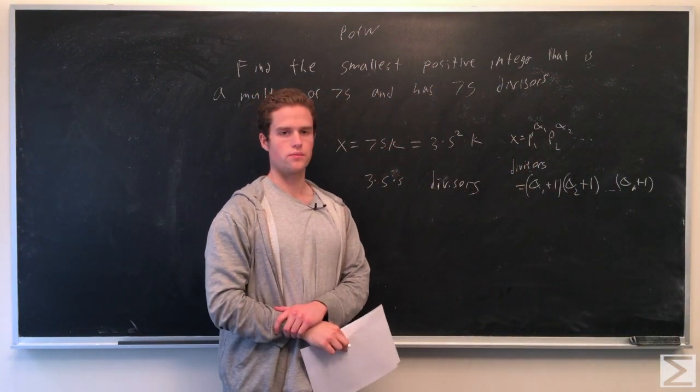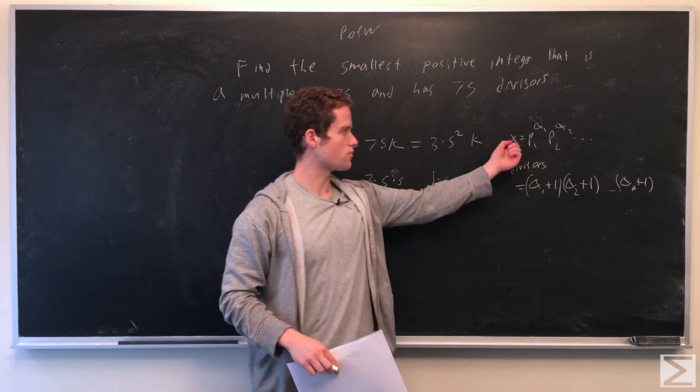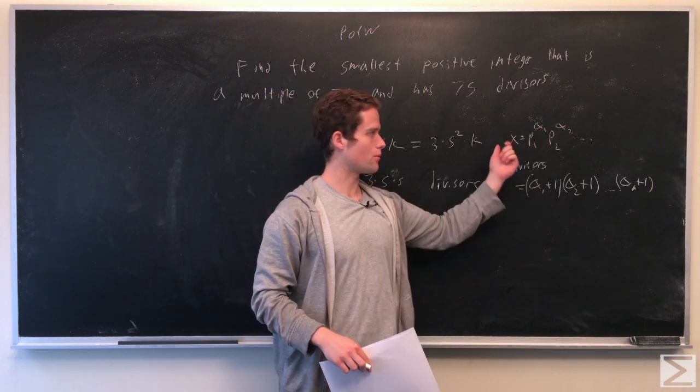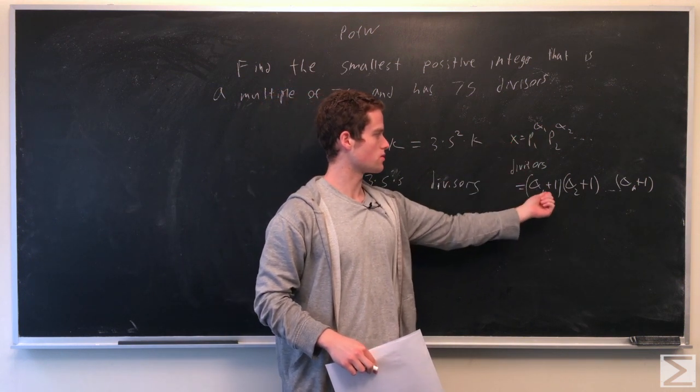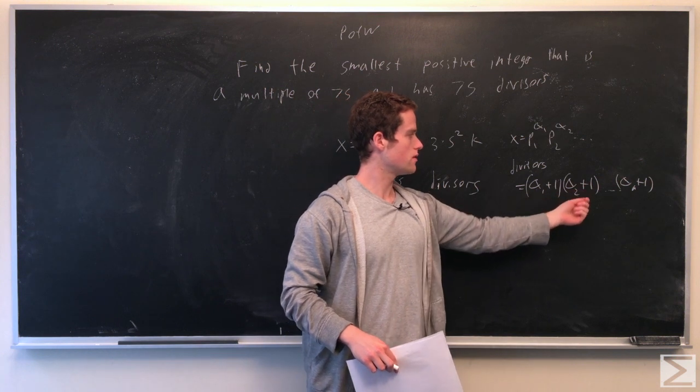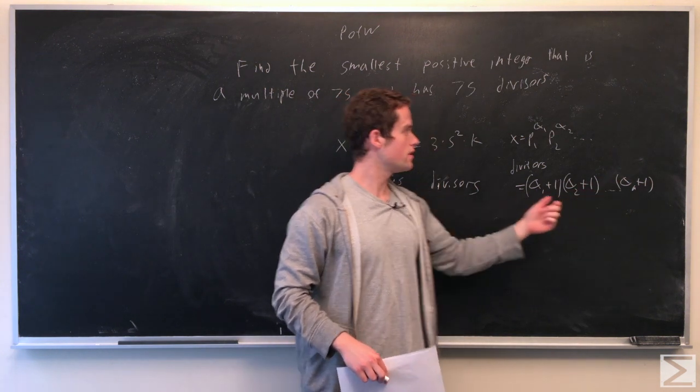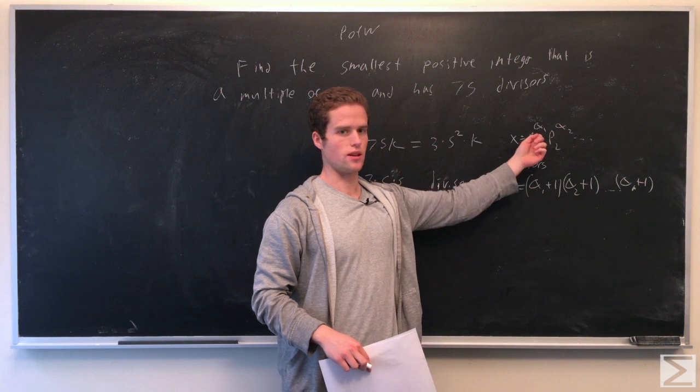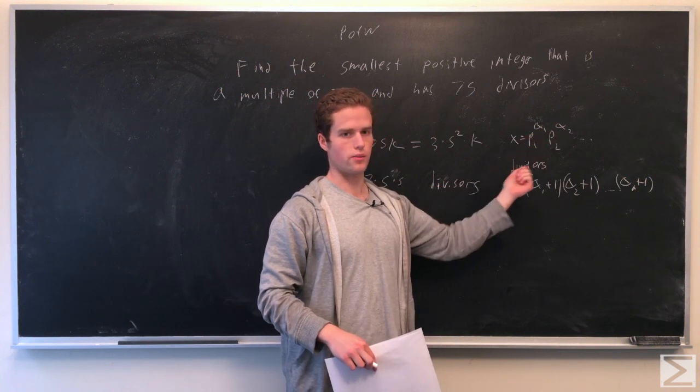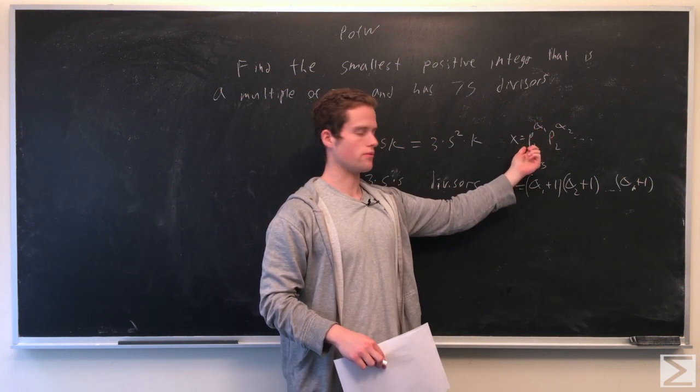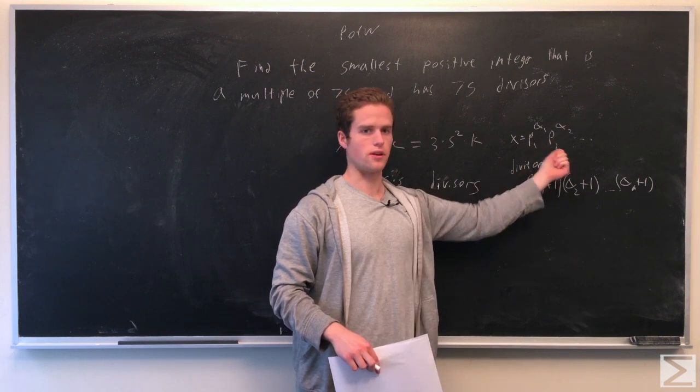It's good to know that normally if we have x as some product of primes to some power, the number of divisors of x is just (α₁+1) times (α₂+1) times ... (αₙ+1). This just corresponds to each one of these. We can take p₁ to the 0 all the way up to α₁, which gives α₁+1 choices, and we can do this for each prime.